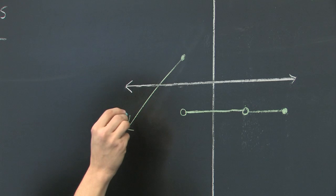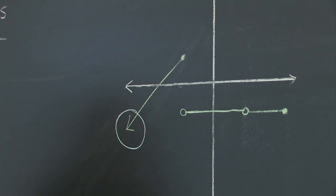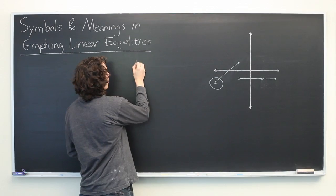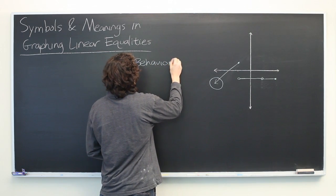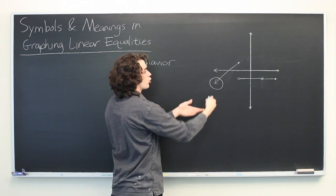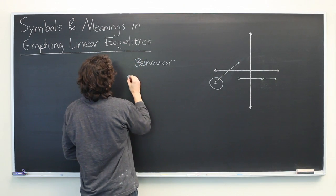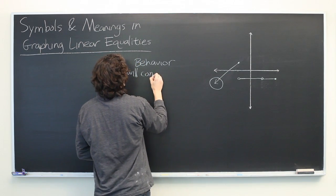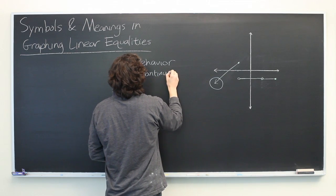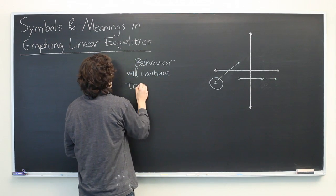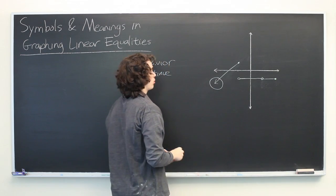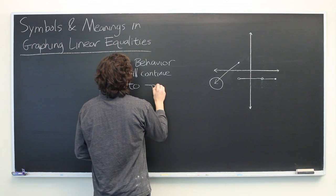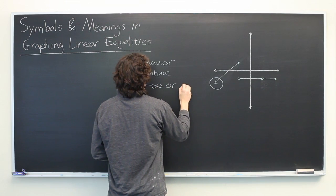First, let's take a look at this arrow here. What that usually is taken to mean is that the behavior of the function will continue in the general trend of what you already see to negative infinity or positive infinity, depending on which direction the arrow is pointing. To negative infinity or positive infinity.